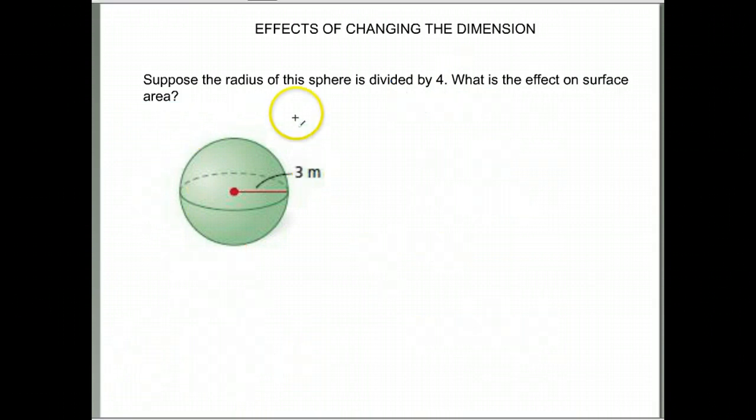Let's try this one. Suppose the radius of this sphere is divided by 4. So again, what we would do is kind of compare them. This is the same figure we had in the last question, so I know its surface area is going to be 36π.